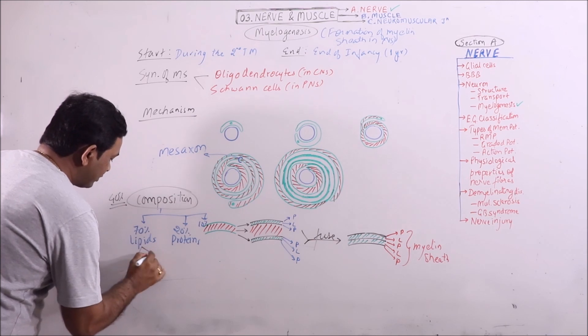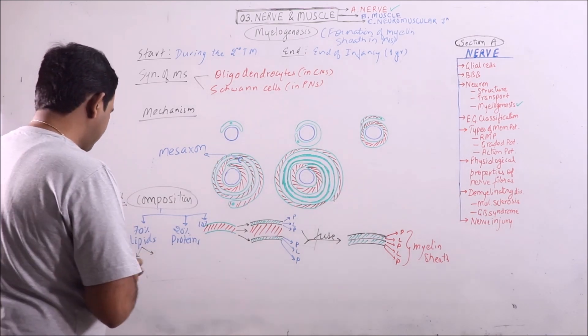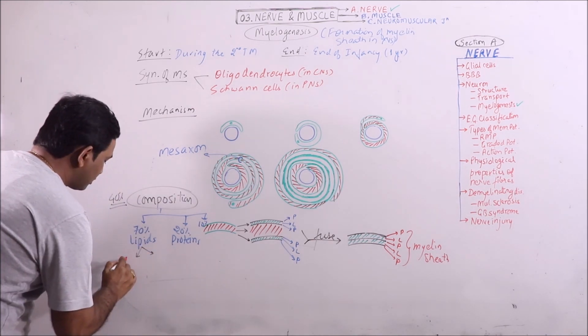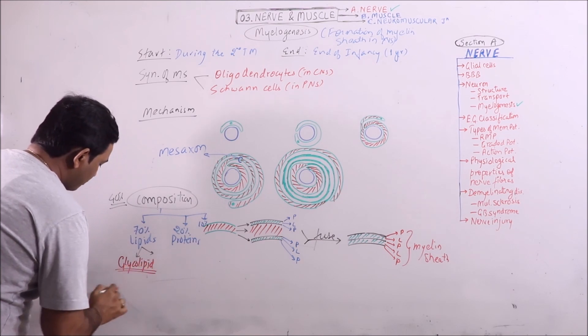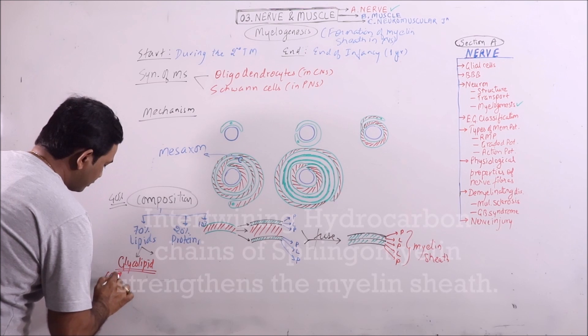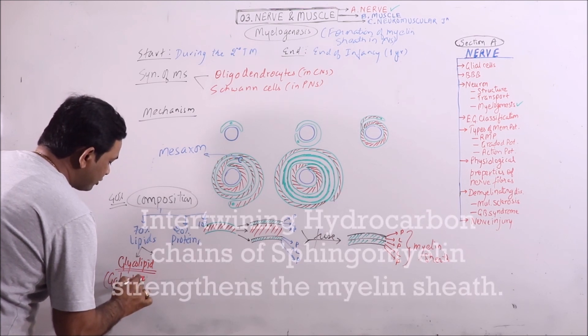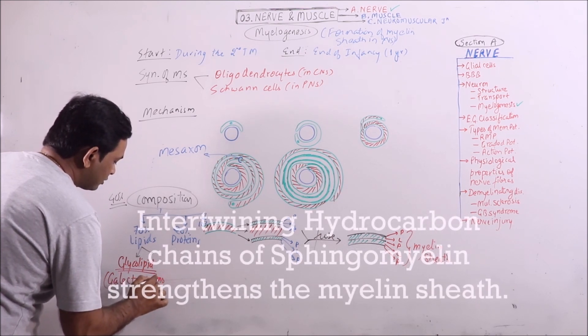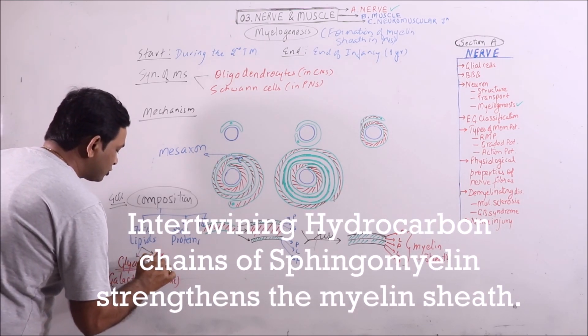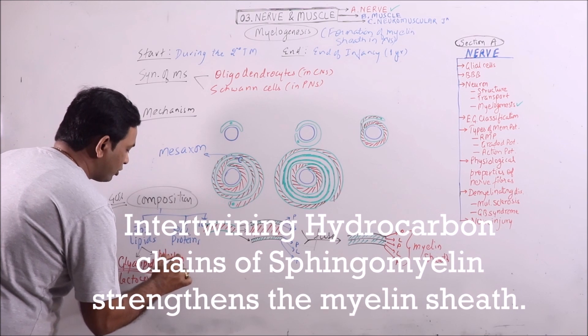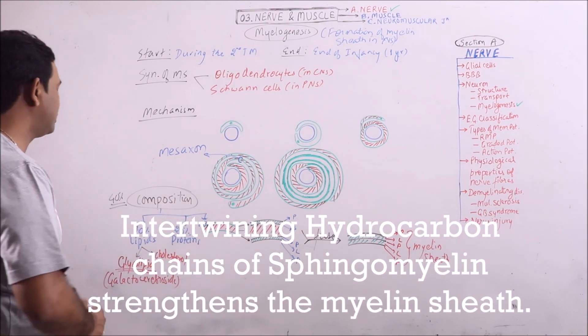Most important lipid is glycolipid, in which galactocerebroside is very important. Even cholesterol is very very important in formation of myelin sheath.